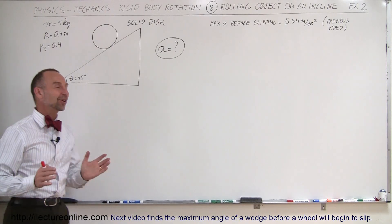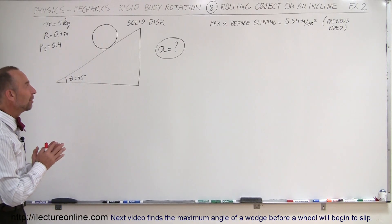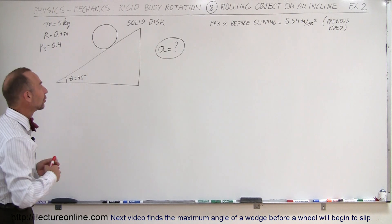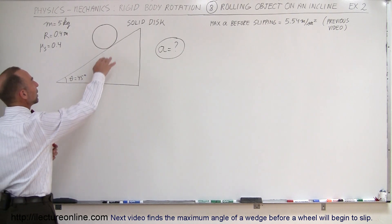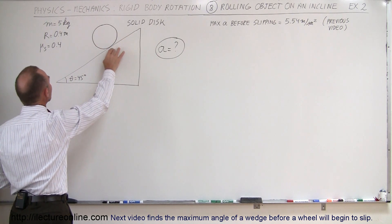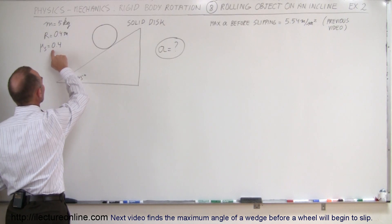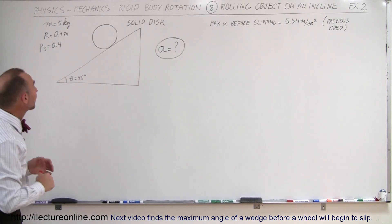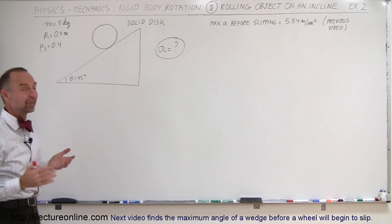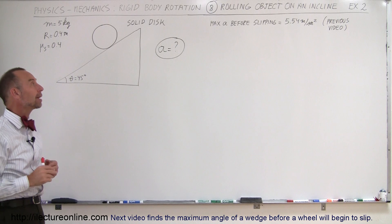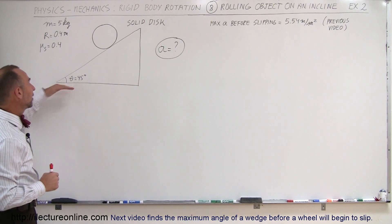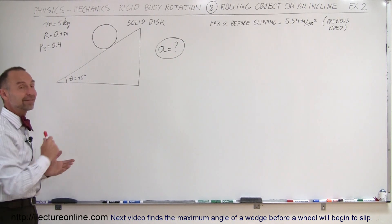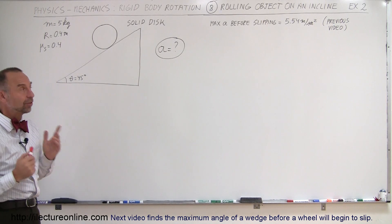Welcome to this lecture. Here's our next example of a rolling object coming down an incline. There's friction between the rolling object — a solid disc — and the incline. The coefficient of friction is 0.4, the radius of the disc is 0.4 meters, the mass is 5 kilograms, and the incline angle is 45 degrees. The question is: what will be the acceleration of this disc?